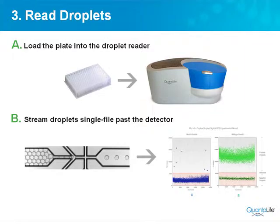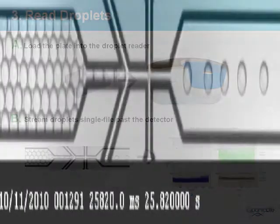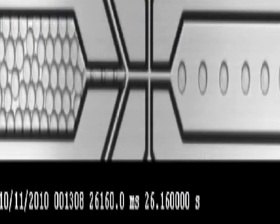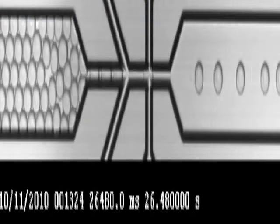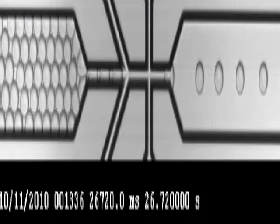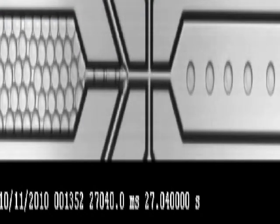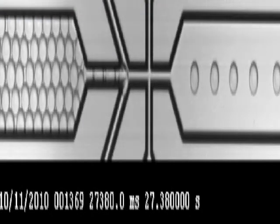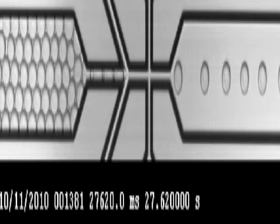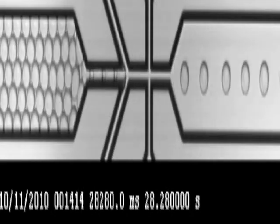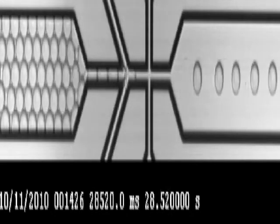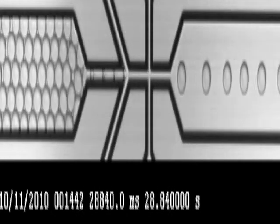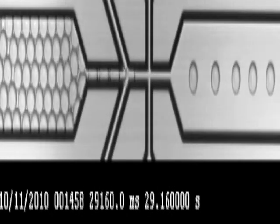It picks up the droplets one at a time. They start out packed and then it streams them past the detector. This is what's happening here — single file — and the detector then scans them on two channels: FAM and VIC for fluorescence.